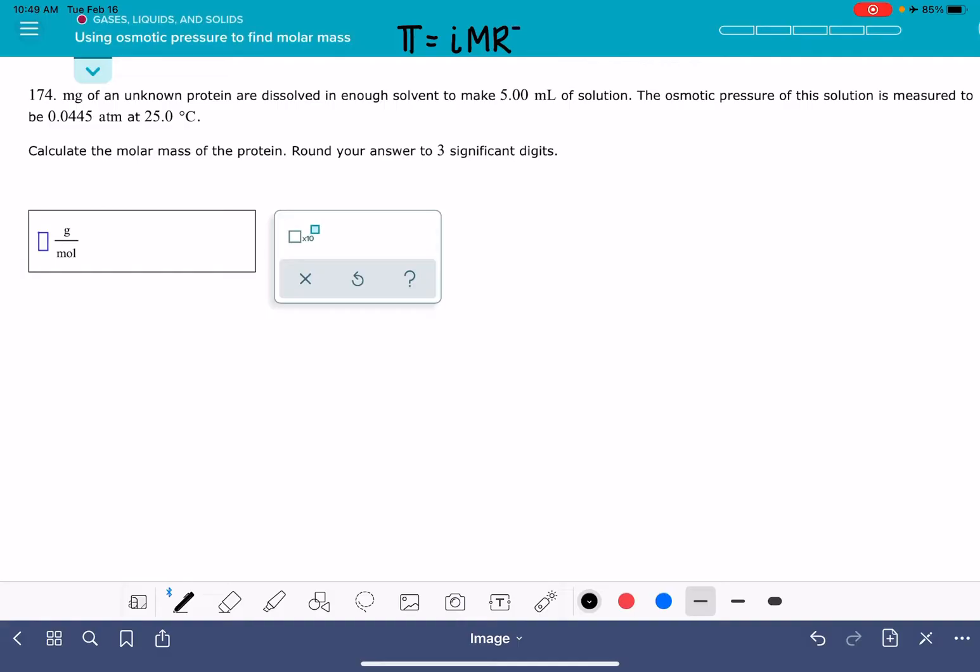It is π = iMRT. π is the osmotic pressure, i is the van't Hoff factor, M is the molarity, not molality, R is the ideal gas constant, and T is the temperature in units of Kelvin. So let's see what information we have in this problem.